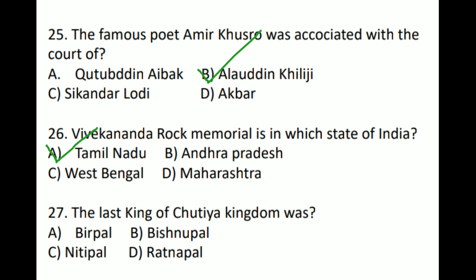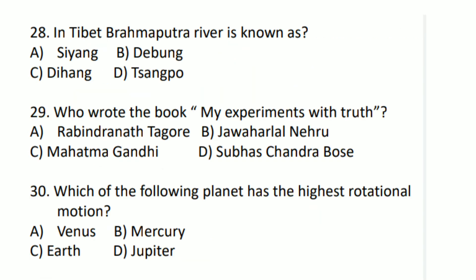The last king of the Chutya kingdom was whom? Next question: In Tibet, the Brahmaputra river is known by what name? The answer is Option D — Tsangpo.